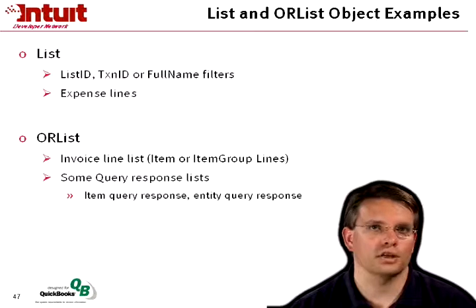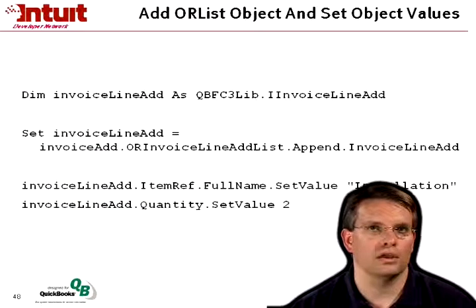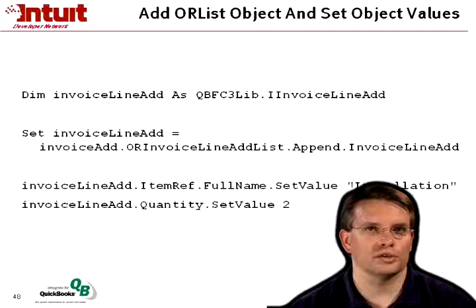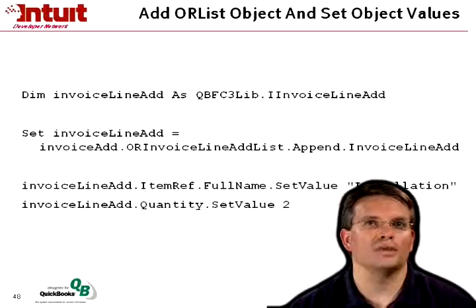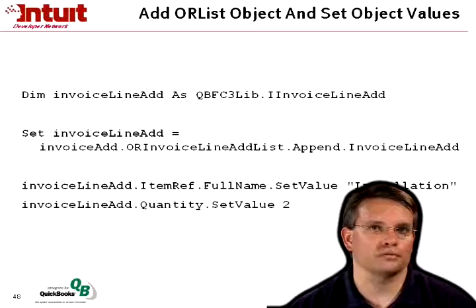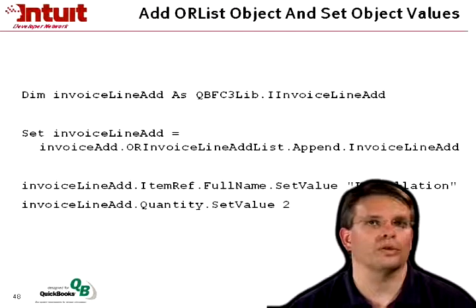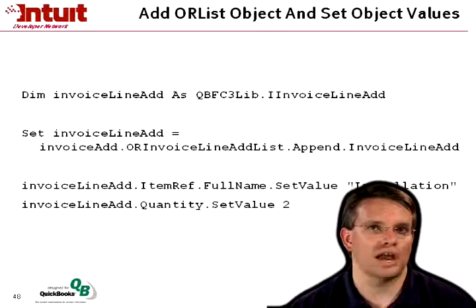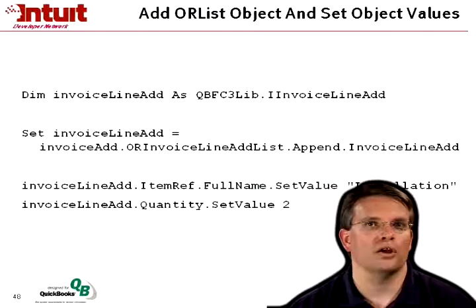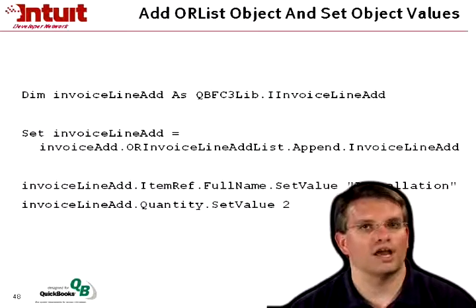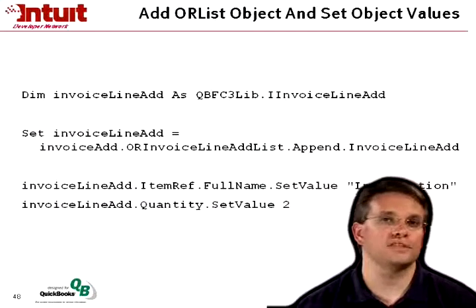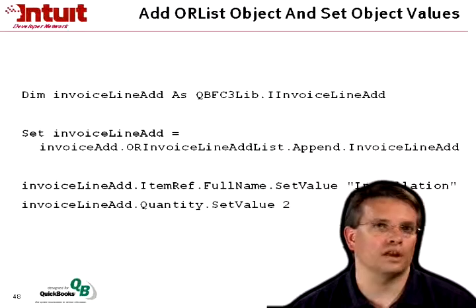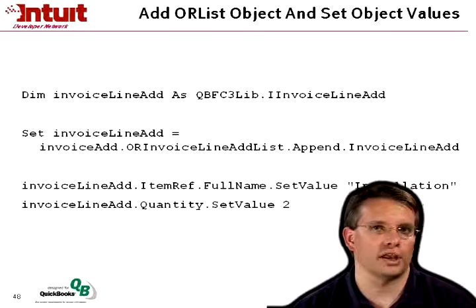Here's a simple, straightforward use of the Or list object in an invoice line add. We create that invoice line add object, and we tell the invoice add request that we want to look at that invoice line add list, and we want to append an invoice line add. Then we can use just that invoice line add to set the item ref and the quantity. If instead we wanted an invoice group line, we would declare our invoice group line add as an IInvoiceGroupLineAdd, and so forth.